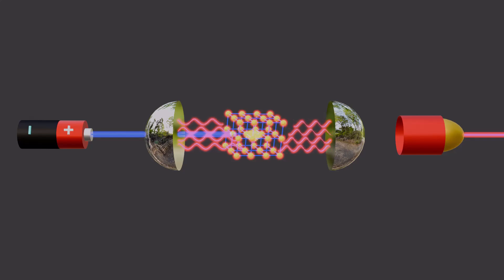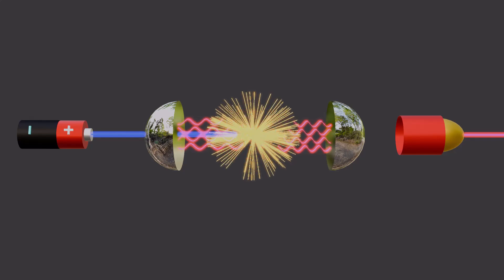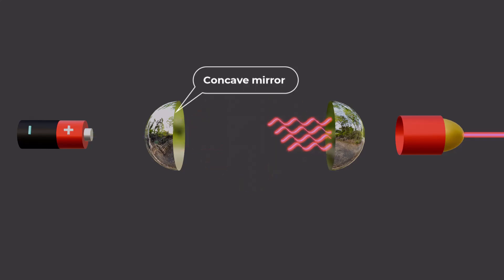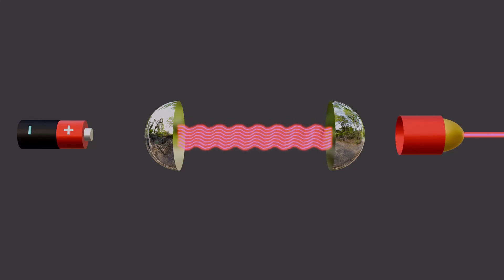But instead of the light just escaping randomly like in a normal bulb, mirrors inside the laser device bounce the light back and forth many times. As the light bounces, it gets stronger and more organized. When the light becomes powerful and perfectly lined up, it finally escapes through a small opening as a tight, strong beam.